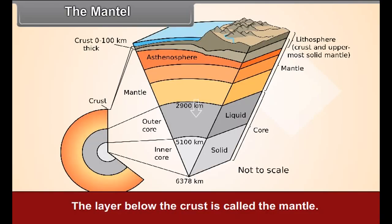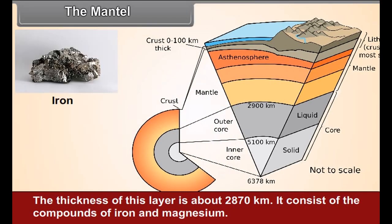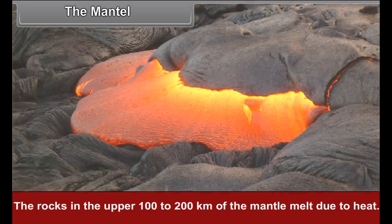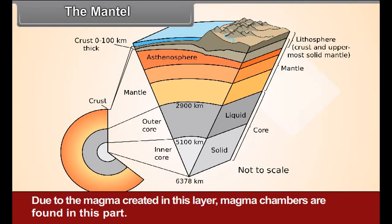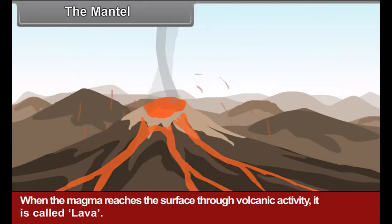The mantle. The layer below the crust is called the mantle. The thickness of this layer is about 2,870 kilometers. It consists of the compounds of iron and magnesium. The rocks in the upper 100 to 200 kilometers of the mantle melt due to heat. Due to the magma created in this layer, magma chambers are formed. When the magma reaches the surface through volcanic activity, it is called lava.